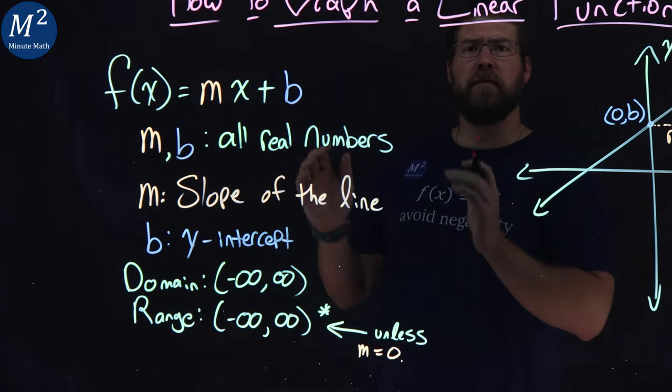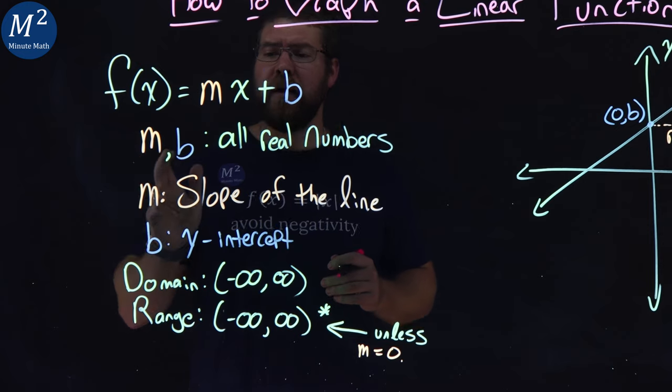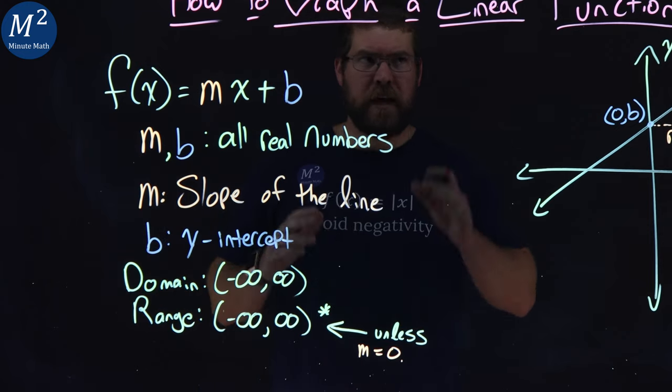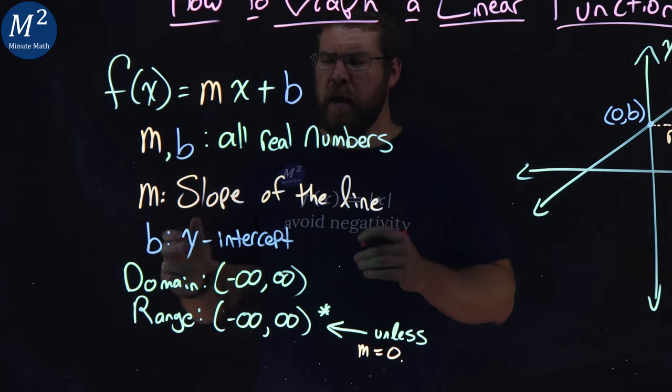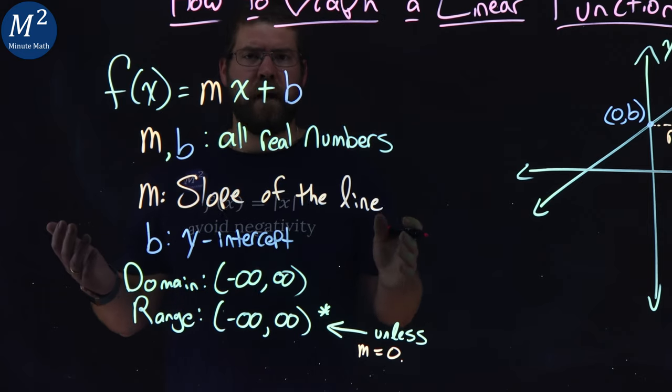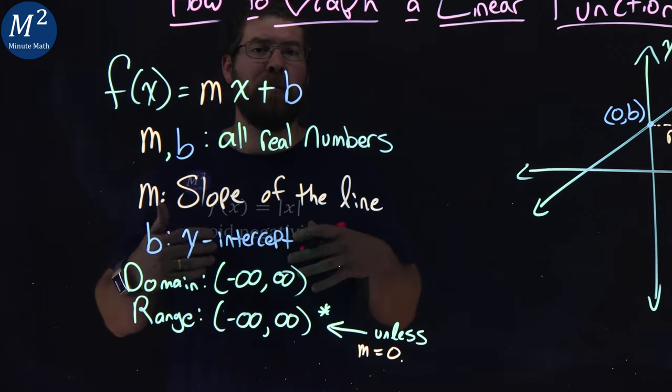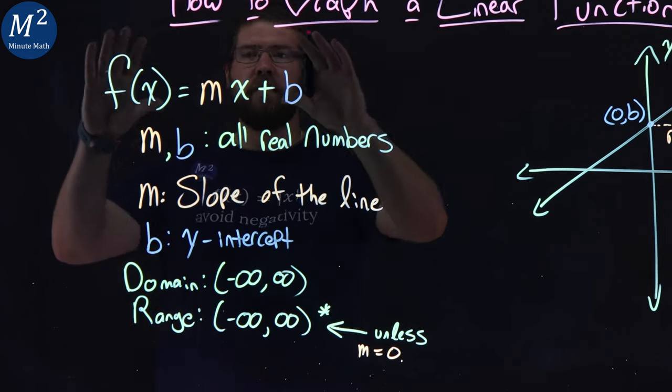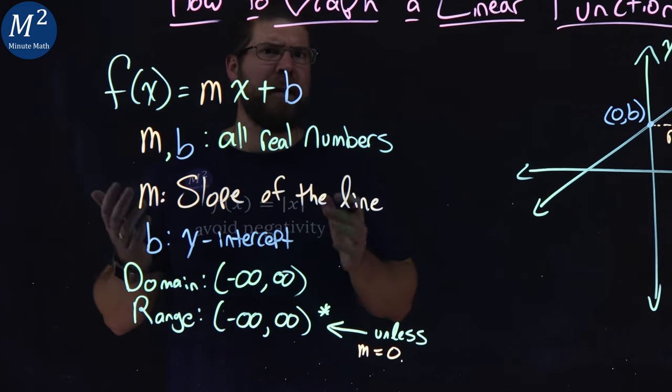There are a few components that we should see. m and b are all real numbers to have it in a linear function here. m is the slope of the line, b is what we call our y-intercept, and these give us the clues here of how to graph this.